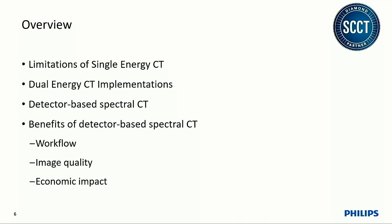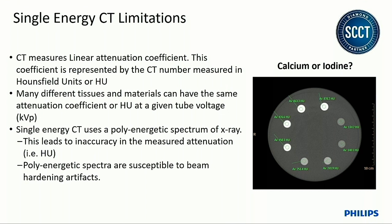What is the limitation of single energy CT? The primary information we get from CT today is a Hounsfield unit, which is representative of the attenuation of material or tissue. It doesn't tell me anything about what that tissue is. You can have two completely different materials — in the example here I'm showing calcium and iodine — and measure identical or near-identical Hounsfield units in both. In a clinical scenario, especially in vascular studies, you might have iodine in a bolus alongside calcification in the vessels.